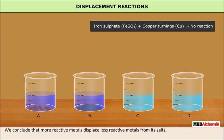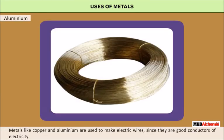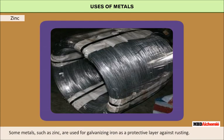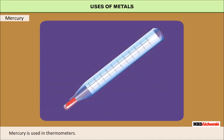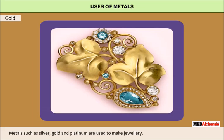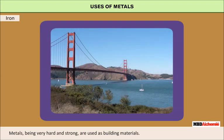Zinc and iron are more reactive than copper. Uses of metals: Metals are used to make electric wires since they are good conductors of electricity. Some metals such as zinc are used for galvanizing iron as a protective layer against rusting. Metals such as aluminium, copper and iron are used to make utensils. Mercury is used in thermometers. Metals such as silver, gold and platinum are used to make jewelry. Nickel and chromium are used for electroplating. Metals, being very hard and strong, are also used as building materials.